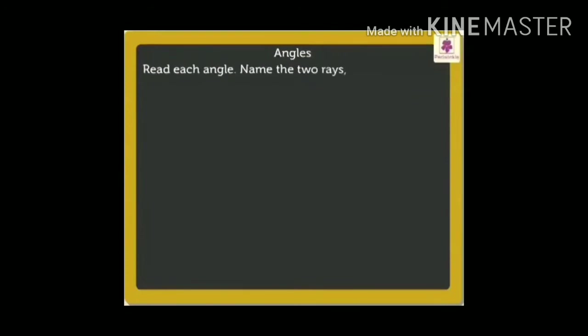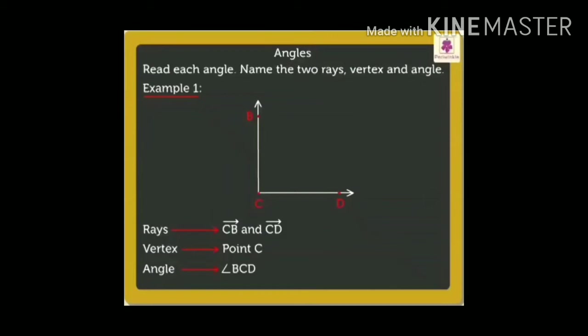Now we will see with the help of an example, writing the name of the rays, vertex and angle. Here in example number 1 you can see, BCD is an angle where the two rays forming these angles are CB and CD. The vertex is point C and the angle which is formed here is BCD or we can say DCB.